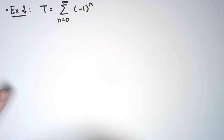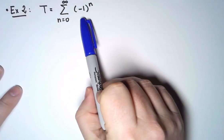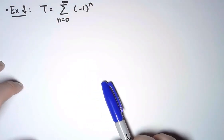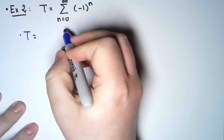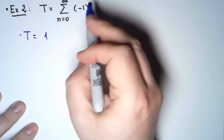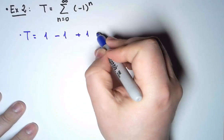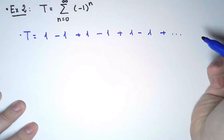As a second example, I'm going to look at this series. The sum from n equals 0 to infinity of minus 1 to the n. I'm going to call the value of this series t. Let's write down the first few terms for it. I start at n equals 0, minus 1 to the 0 is 1, plus minus 1 to the 1 is minus 1, plus minus 1 to the 2 is 1, and then minus 1, plus 1, minus 1, and keeps on going forever.